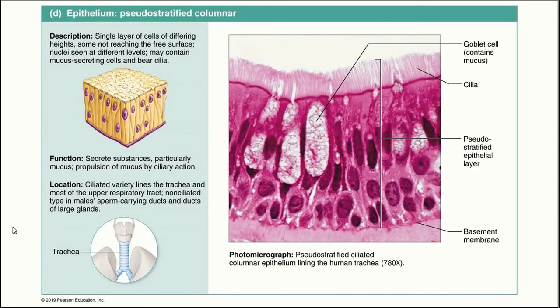There is also a non-ciliated variety of pseudostratified columnar epithelium, which is found in the sperm-carrying ducts of the male reproductive system as well as the ducts of some large glands.